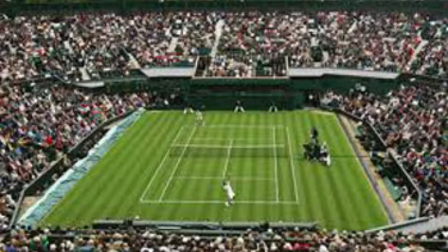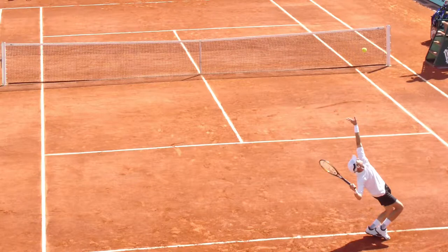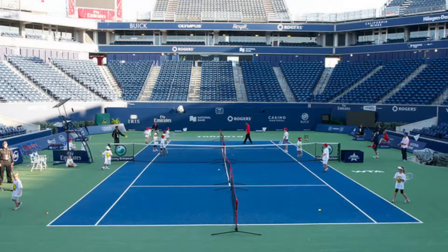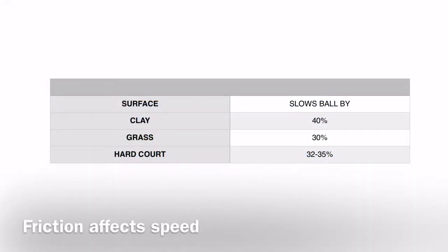The sport of tennis is played on three different surfaces: clay, grass, and hard courts. Each surface affects the game differently, the two main factors being the speed of the ball and the height of the ball's bounce. When it comes to the speed of the ball, we must look at the different levels of friction present in each type of surface. Thus, each surface slows the ball in the following manner.